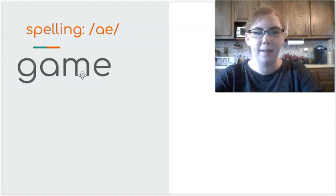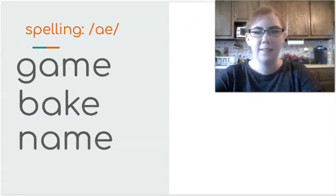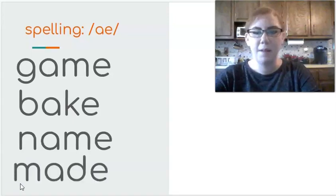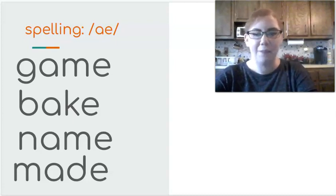Let's look at some more words that have this letter team. Game: G, A, M, E. It has the A and the E that work together to say A. Bake: B, A, K, E. Name: N, A, M, E. Made: M, A, D, E. The A and the E make what sound? Together they say A. Very good.